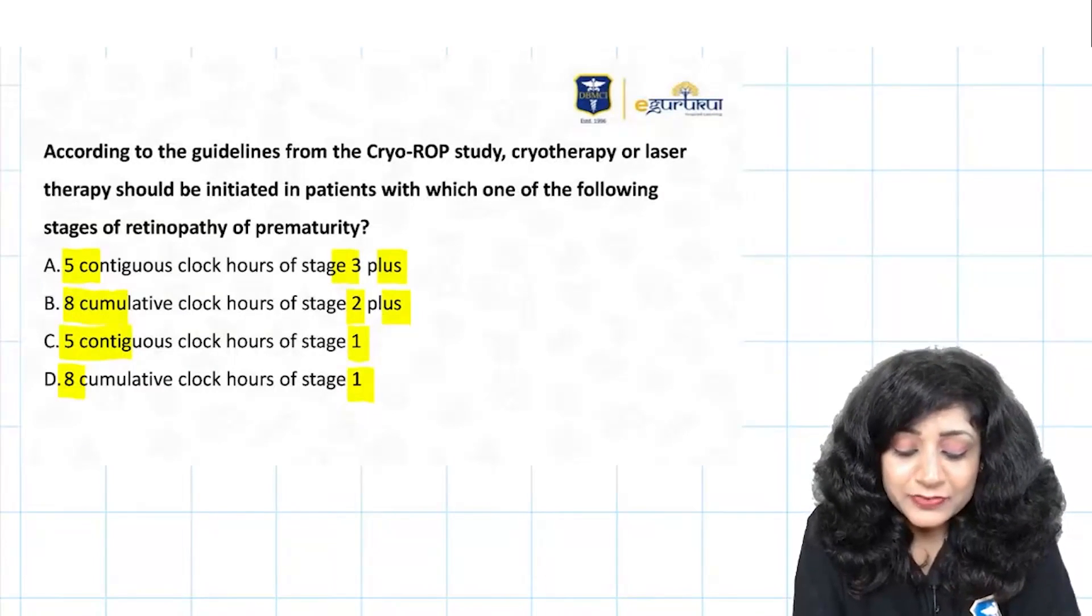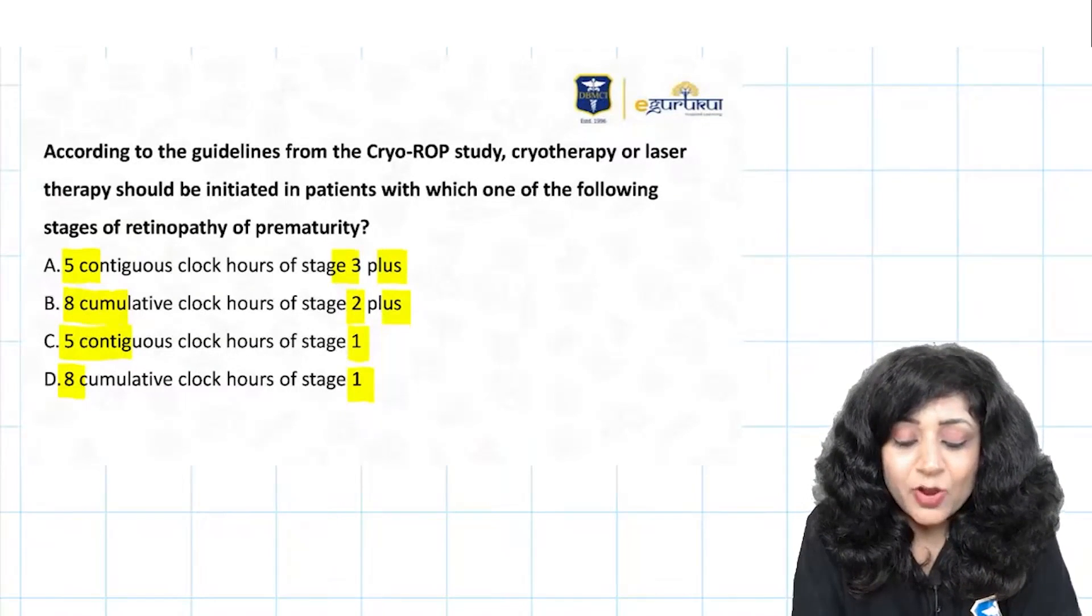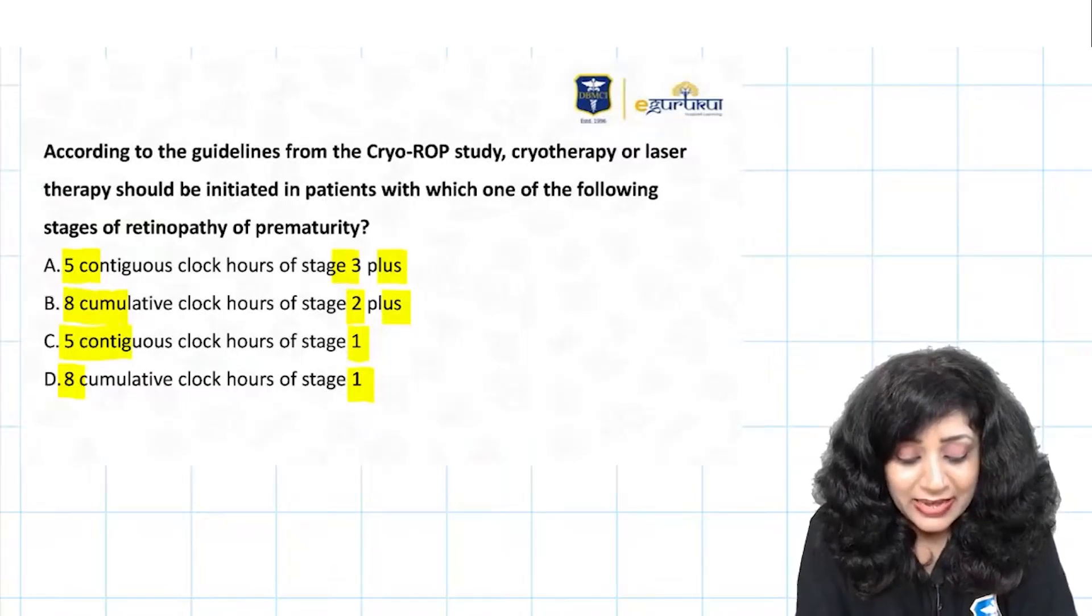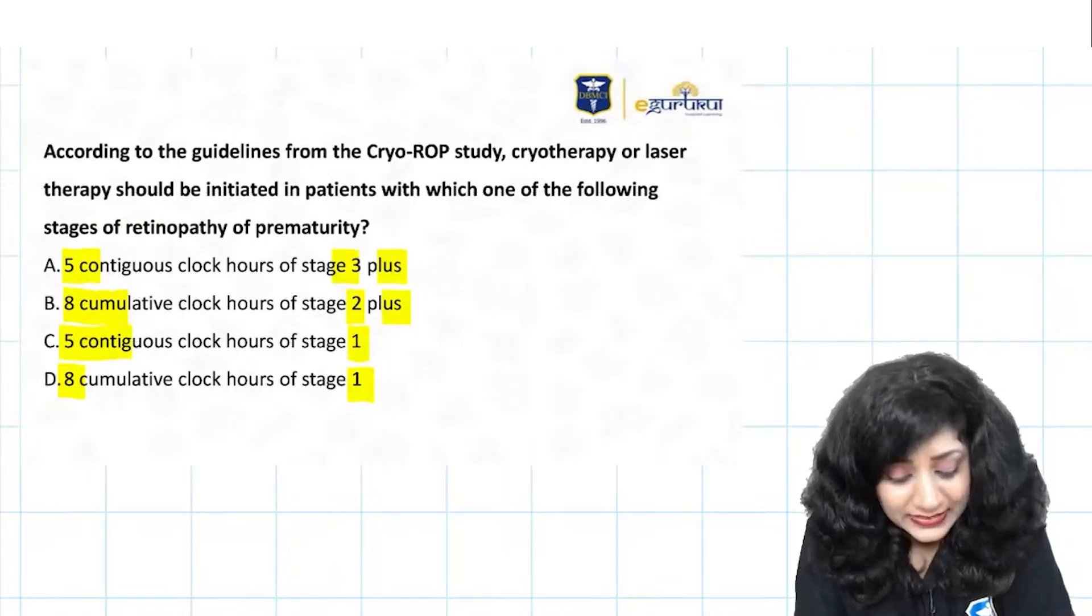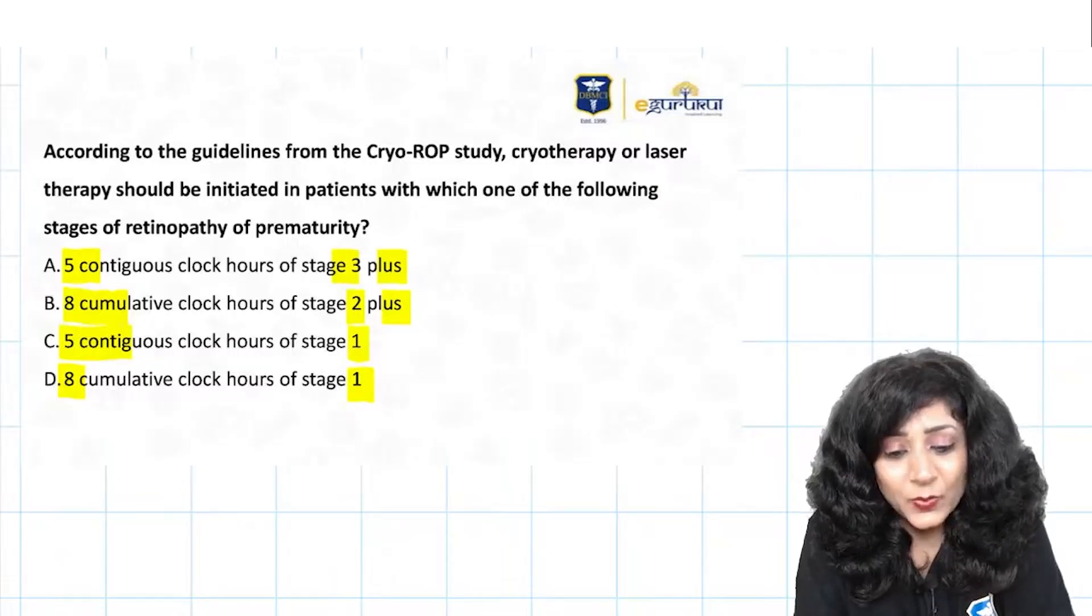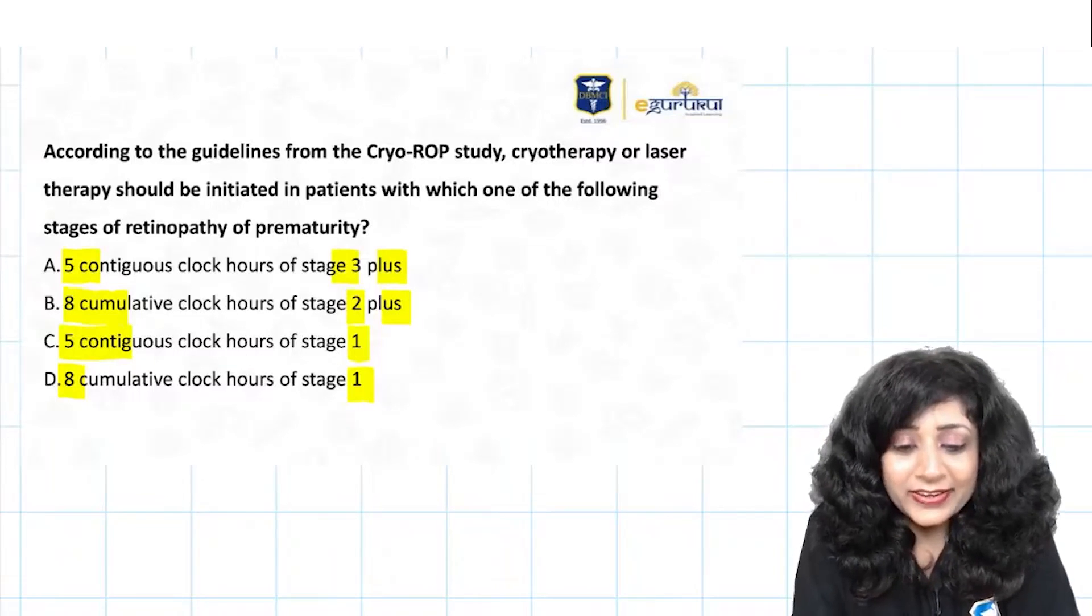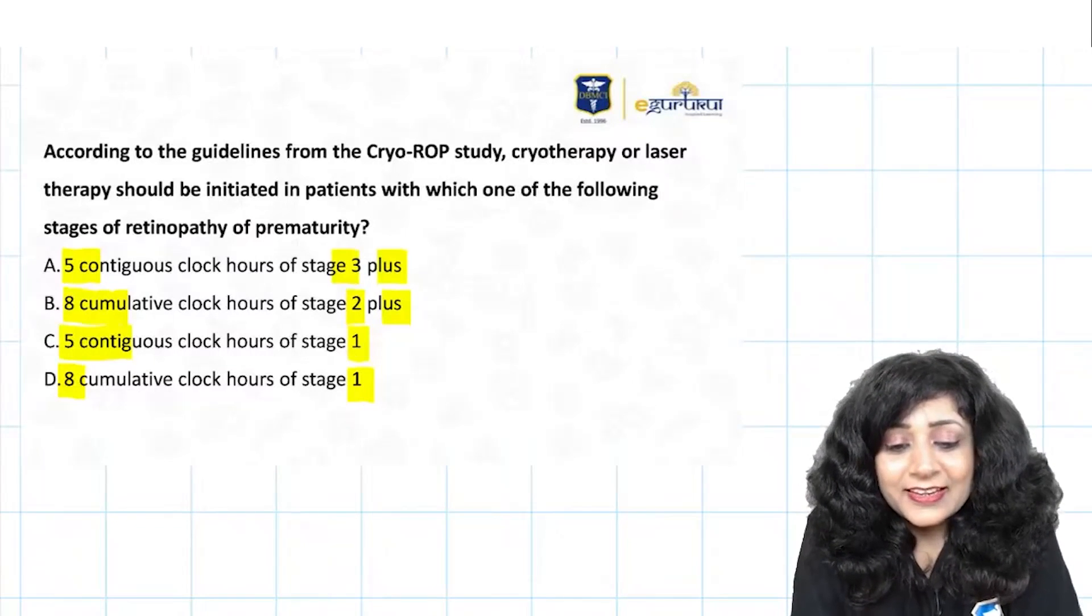5 contiguous clock hours of stage 3 plus, 8 cumulative clock hours of stage 2 plus, 5 contiguous clock hours of stage 1, or 8 cumulative clock hours of stage 1. You are enjoying.